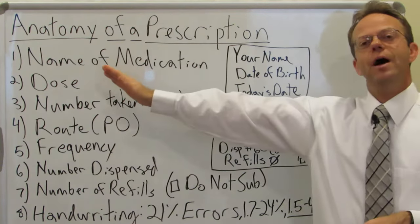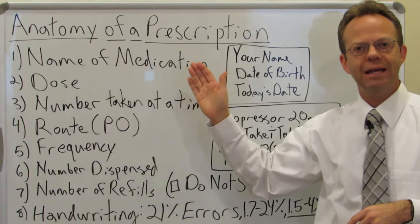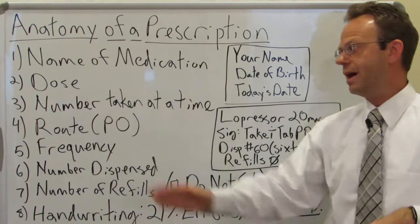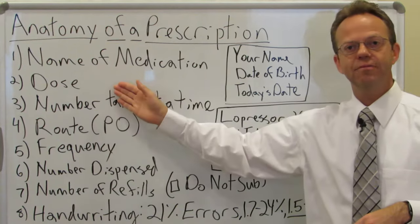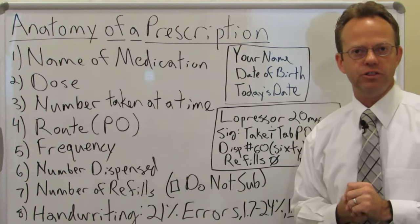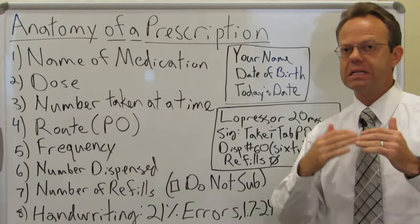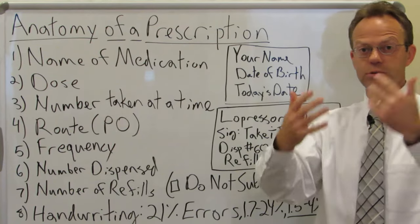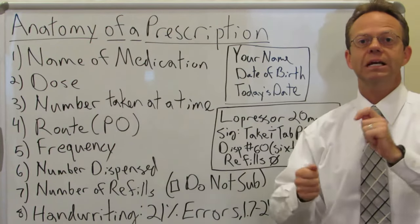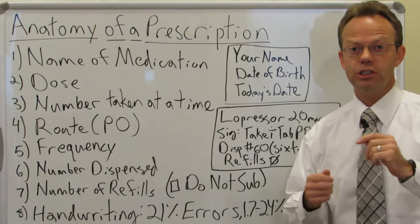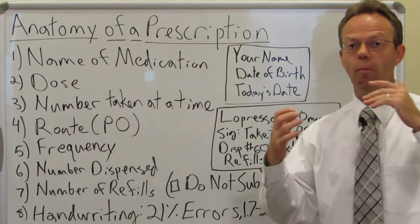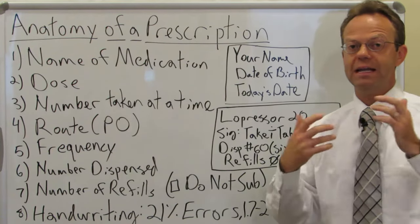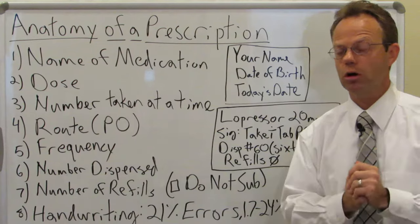First up, you have to have the name of the medication. Then, completely separate from that, you have to have the dose. That's super important because not all medications come in all doses. Does it come in 10 milligrams, 20 milligrams, 40 milligrams? Not all doctors have that memorized, so they either have to look it up or guess — and they might get it wrong.